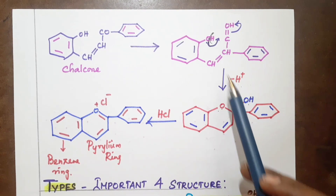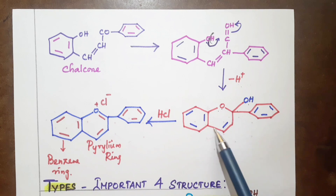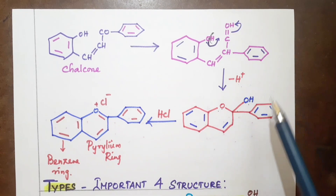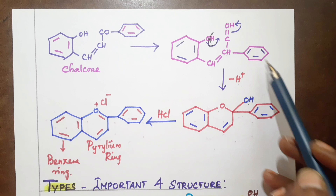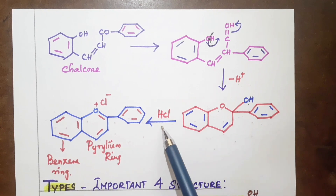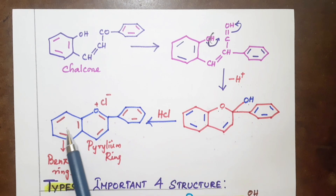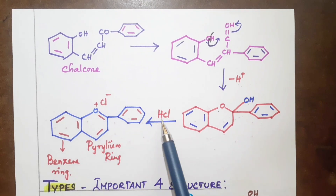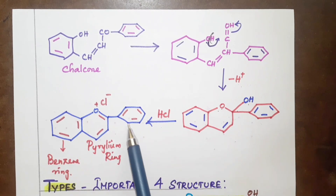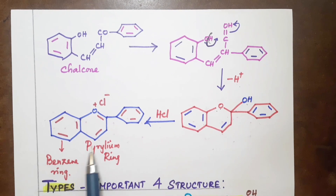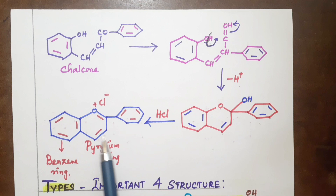The pyrylium ring is formed from the benzene ring. In the presence of HCl, the benzene ring and the pyrylium ring combine, with HCl contributing Cl and H. The final result is a structure containing a benzene ring fused with a pyrylium ring and another benzene ring. This structure is the anthocyanin structure.